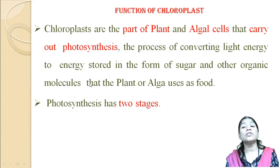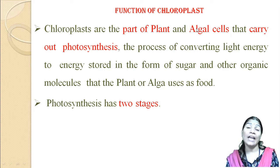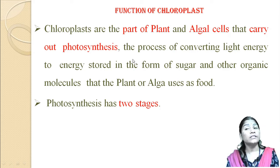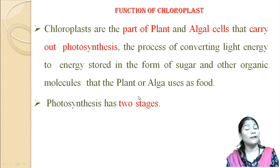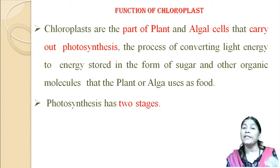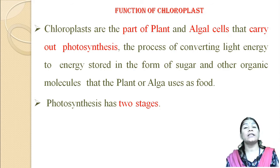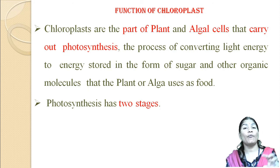The functions of chloroplasts: chloroplasts are the part of plant and algal cells which carry out the most important process — photosynthesis. Photosynthesis is the process of converting light energy into energy stored in the form of sugars and different organic molecules that plant and algal cells use as food. Photosynthesis occurs only in the organelle called the chloroplast, which plays an important role as the site for photosynthesis and the preparation of food for the plant.